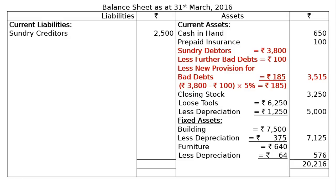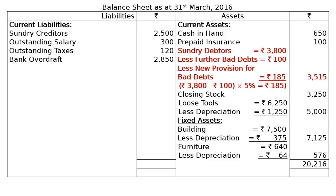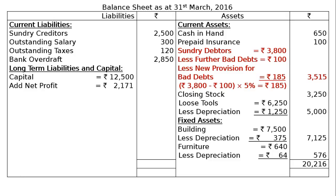Coming to the liability side: current liabilities — sundry creditors rupees 2,500, outstanding salary rupees 300 as an adjustment shown on the liability side, outstanding taxes rupees 120, and bank overdraft rupees 2,850.